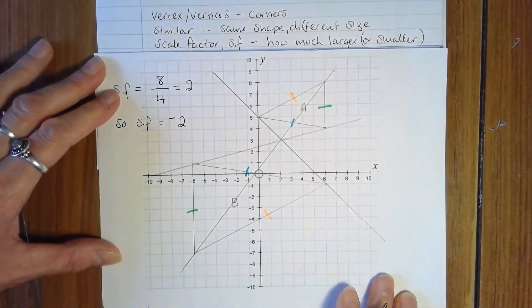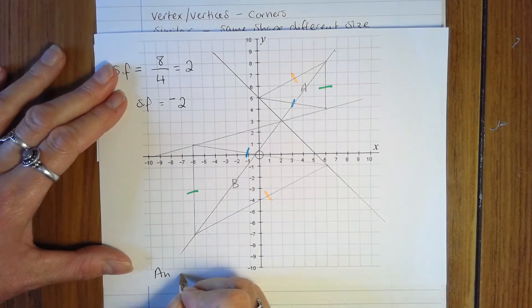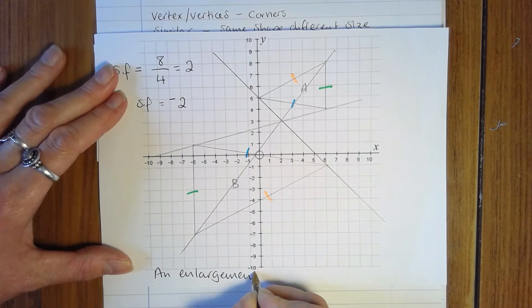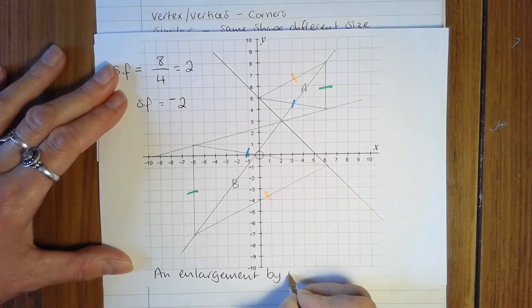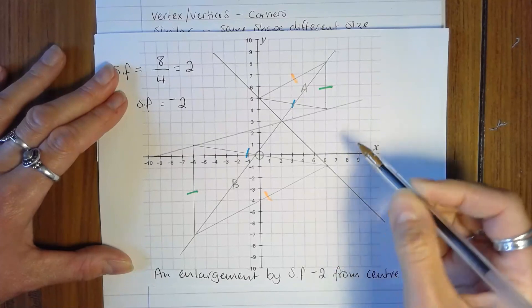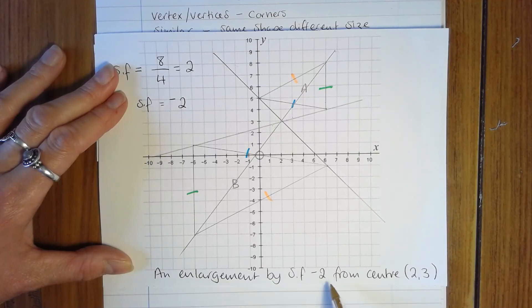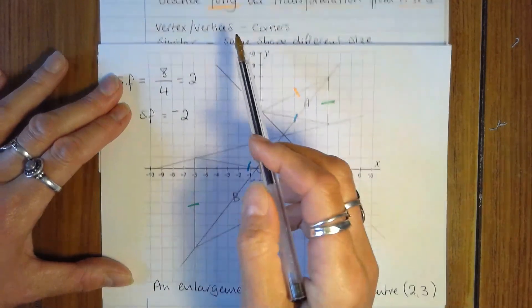So that means that the full description would be an enlargement by scale factor negative 2 from center 2, 3. And they are the three important parts of the description to describe fully.